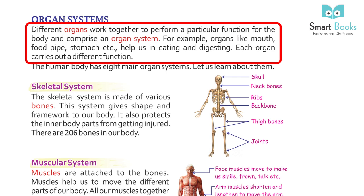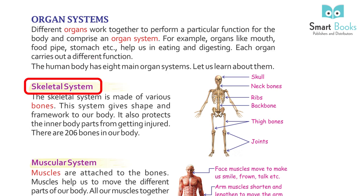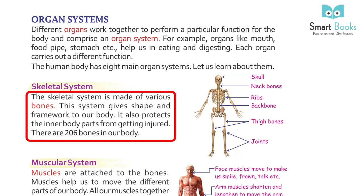For example, organs like mouth, food pipe, and stomach help us in eating and digesting food. Each organ carries out a different function. The human body has eight main organ systems.